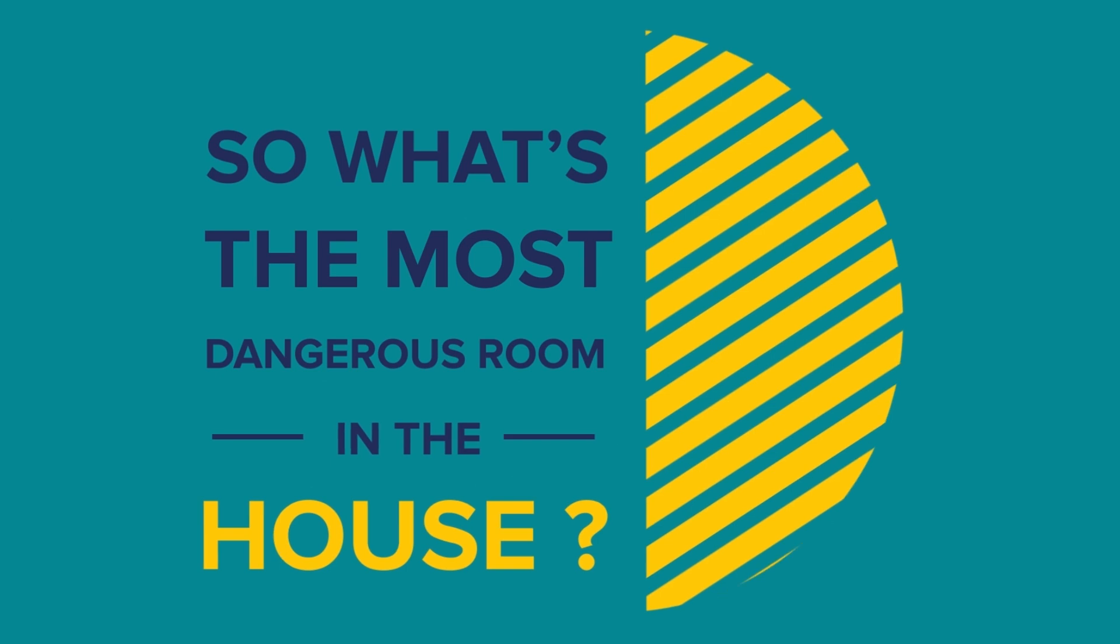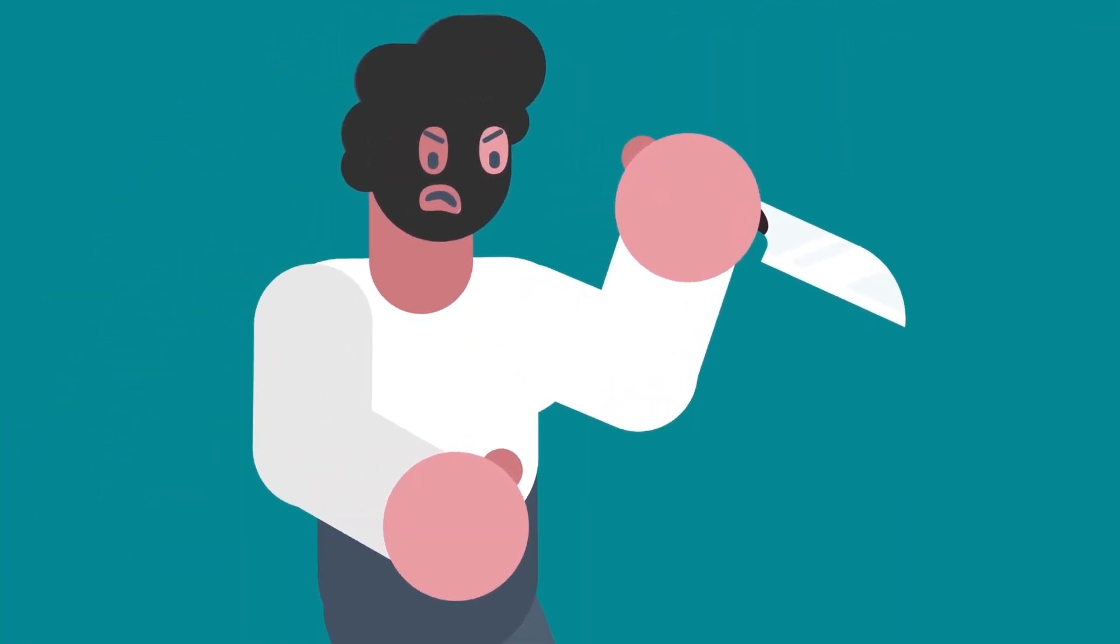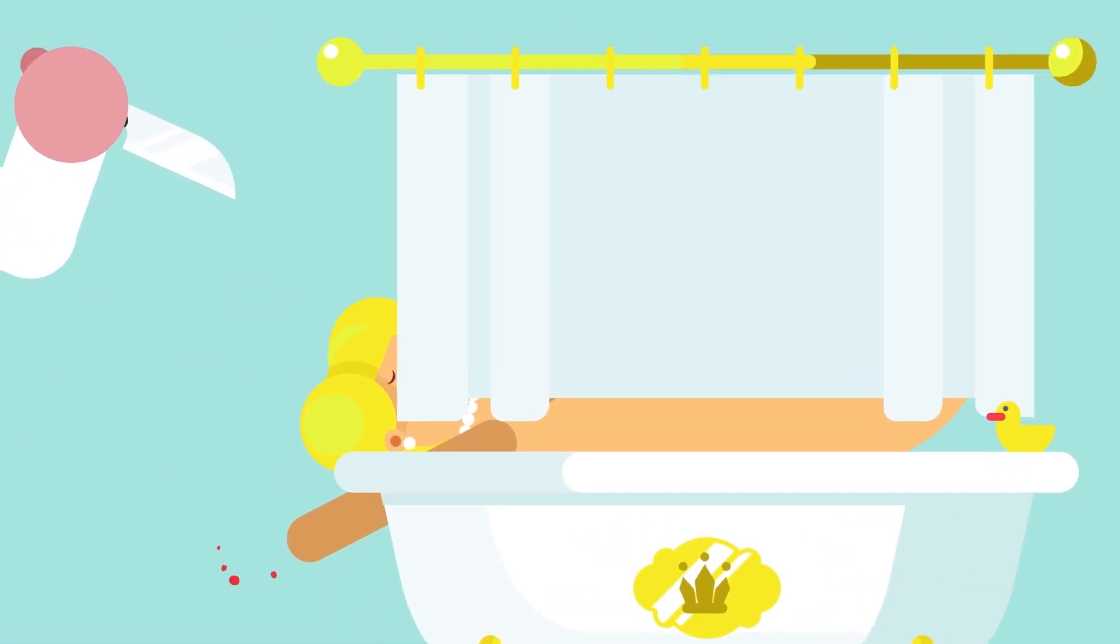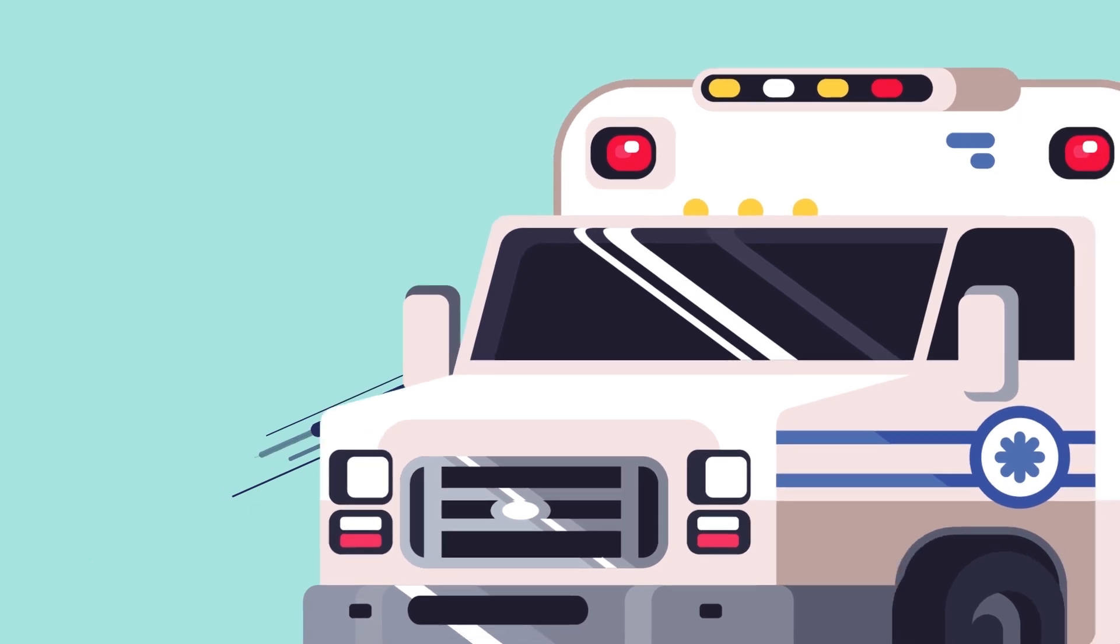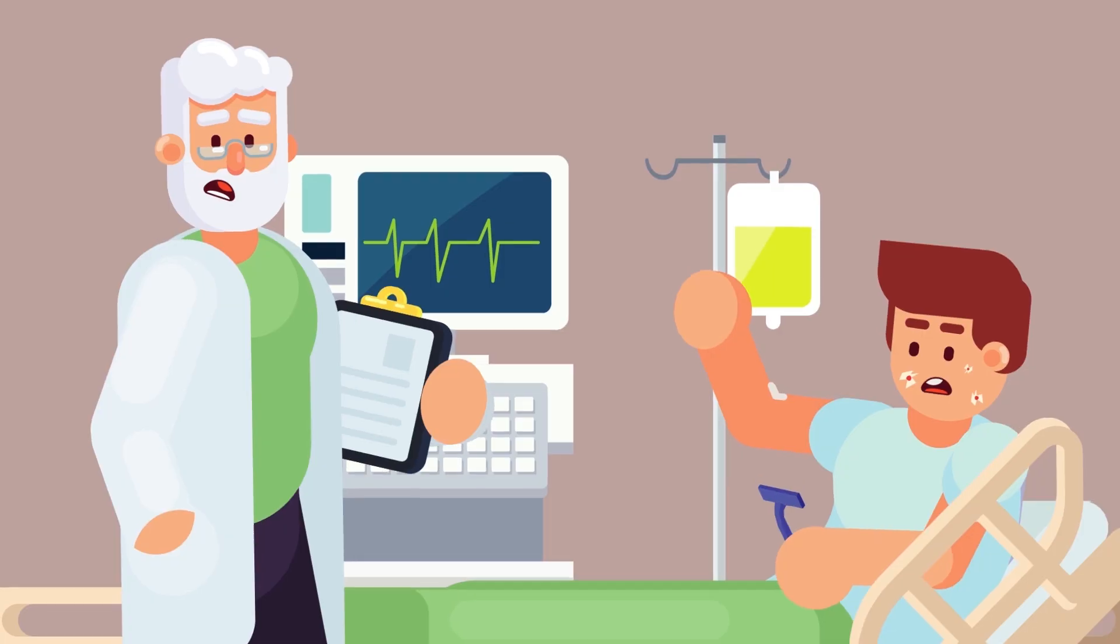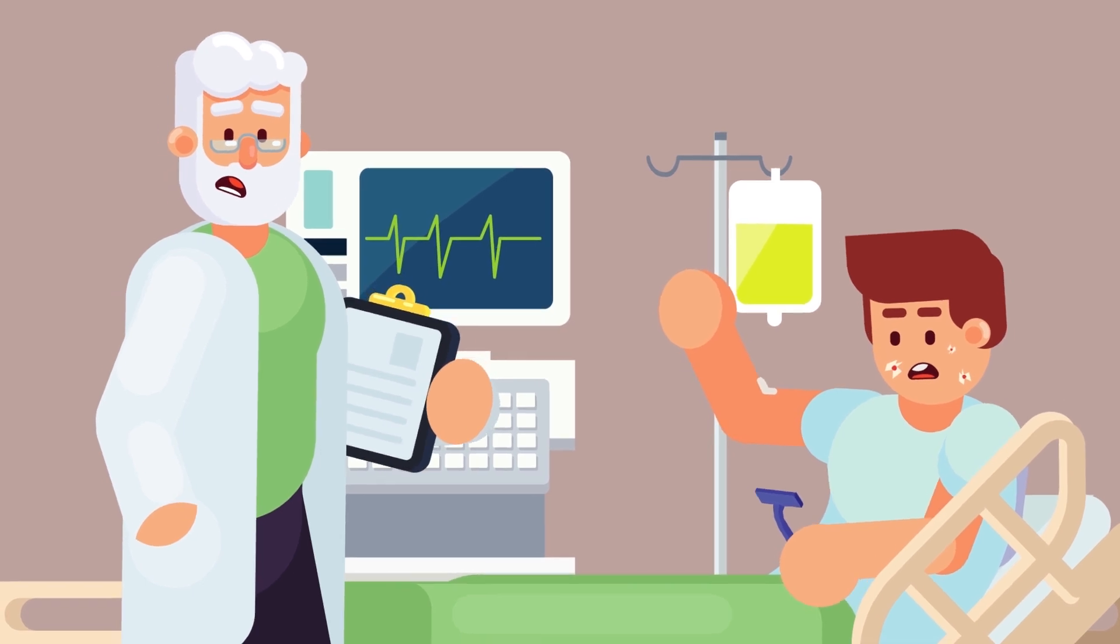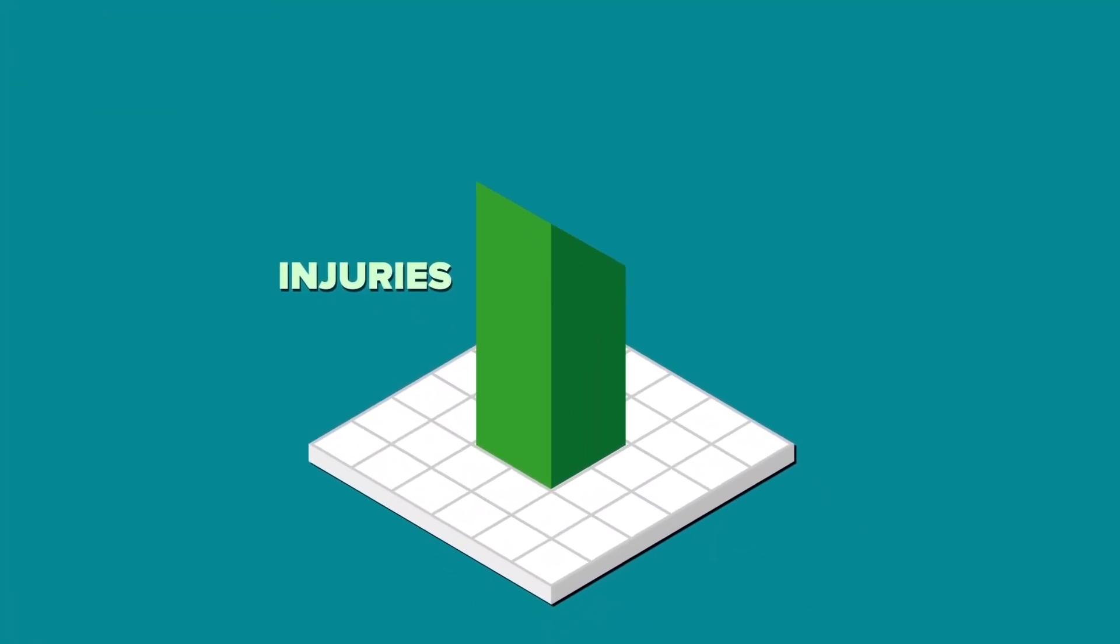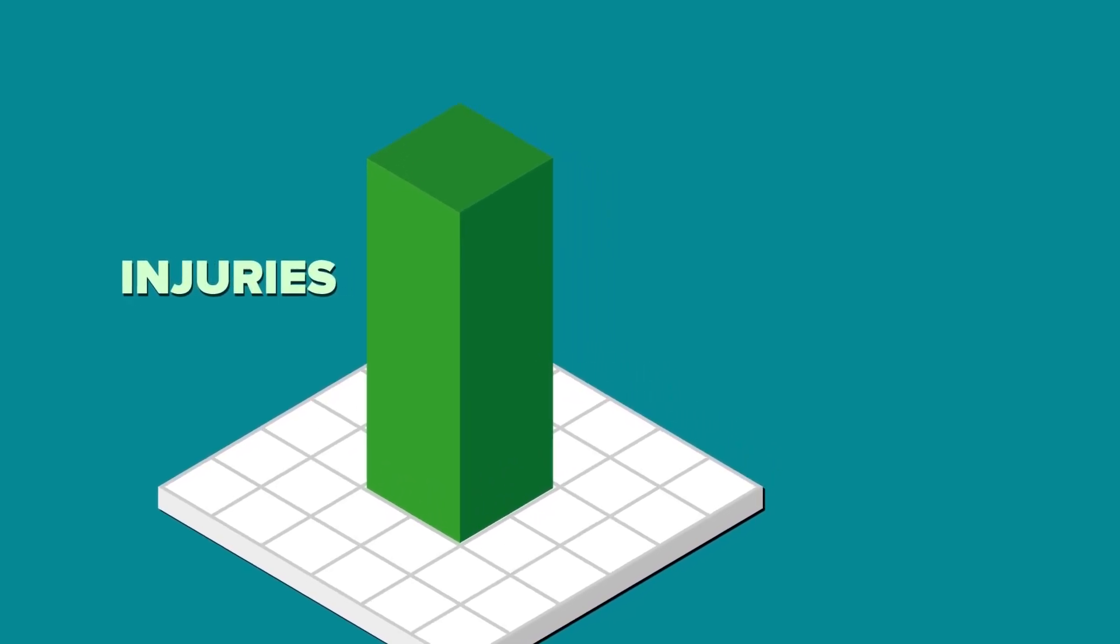So what's the most dangerous room in the house? While the kitchen can be a fire disaster waiting to happen, it turns out the riskiest room in the house is actually at number 1, the bathroom. According to the Centers for Disease Control and Prevention, each year around 235,000 people in the United States over the age of 15 visit emergency rooms because of bathroom-related injuries. About 14% of those are admitted for an overnight stay. A third of these injuries happen while bathing or showering.